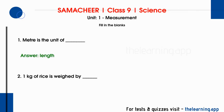Second question: 1 kg of rice is weighed by — correct answer is beam balance. In shops, a beam balance is used to measure mass. When we place a kilogram weight on one side, we measure using the beam balance.